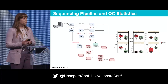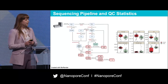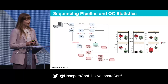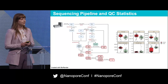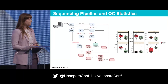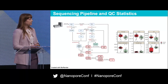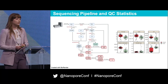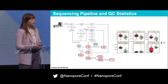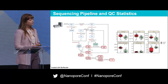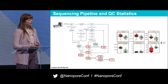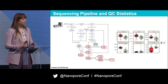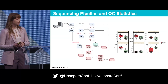Looking at the QC metrics for these samples, the HTMCP samples had an average of 30x coverage, while TCGA had an average of 20x coverage. N50s for HTMCP samples were around 20kb, while TCGA was around 10kb. The HTMCP samples generally also had a lower chimeric rate and error rate.